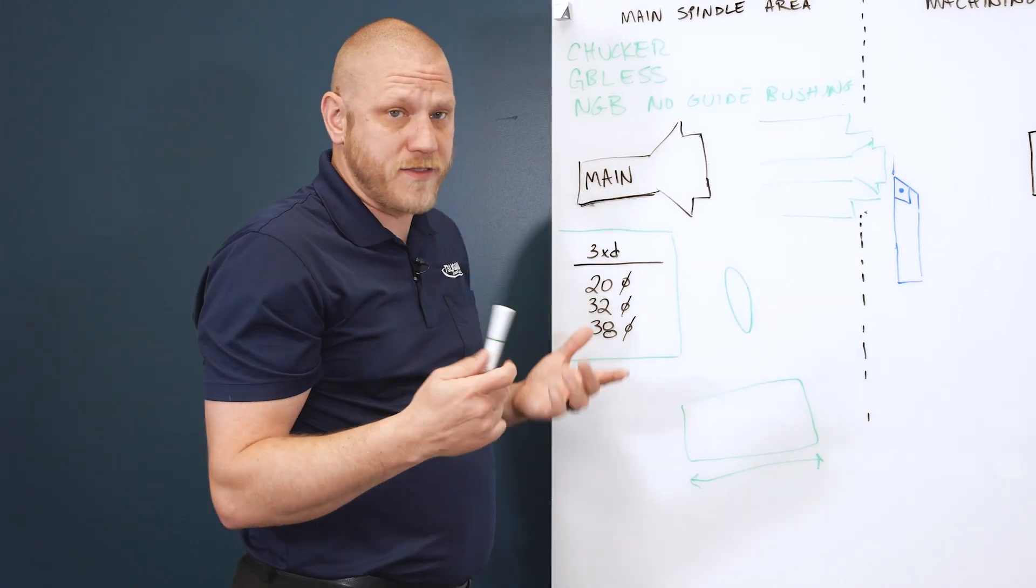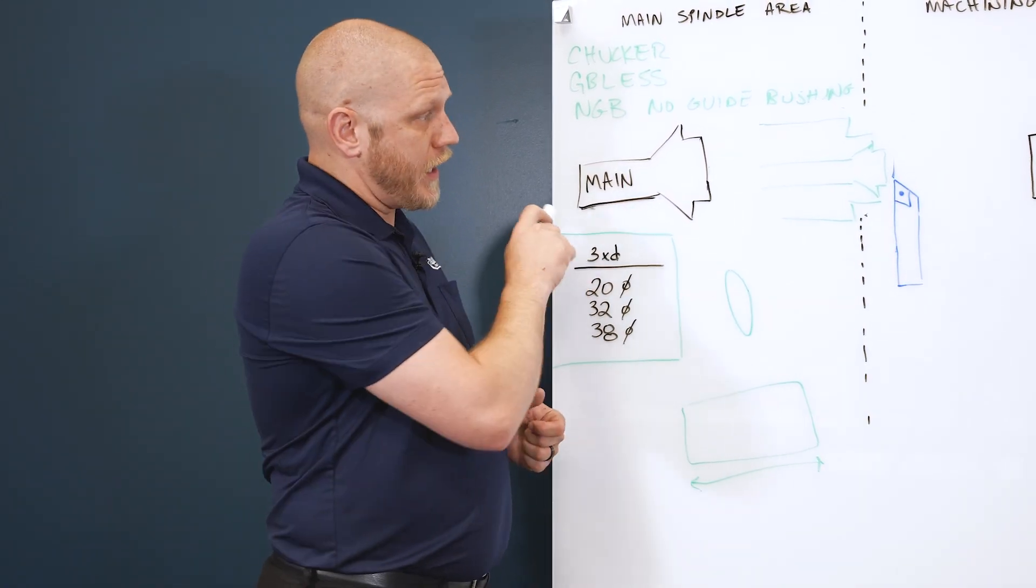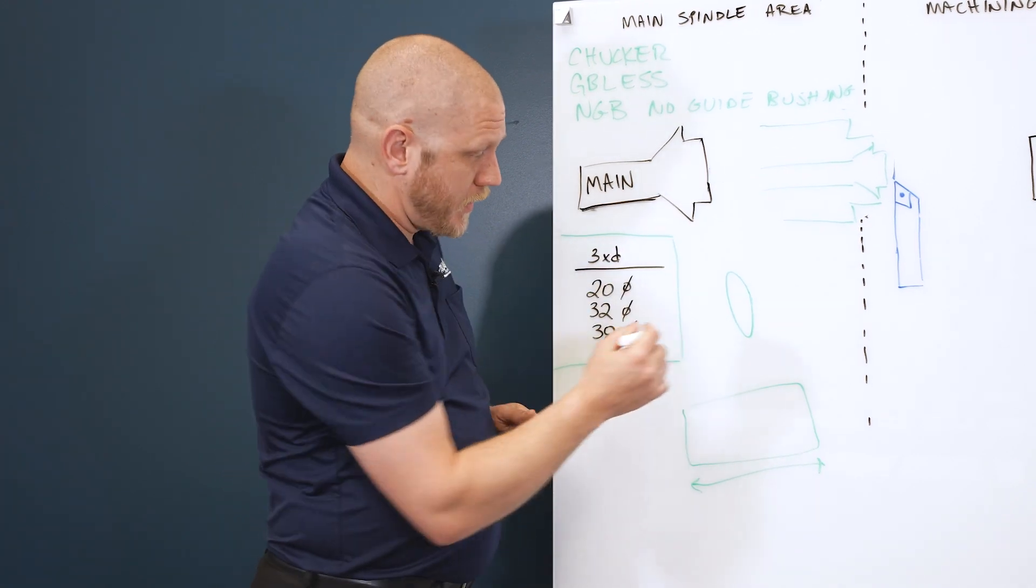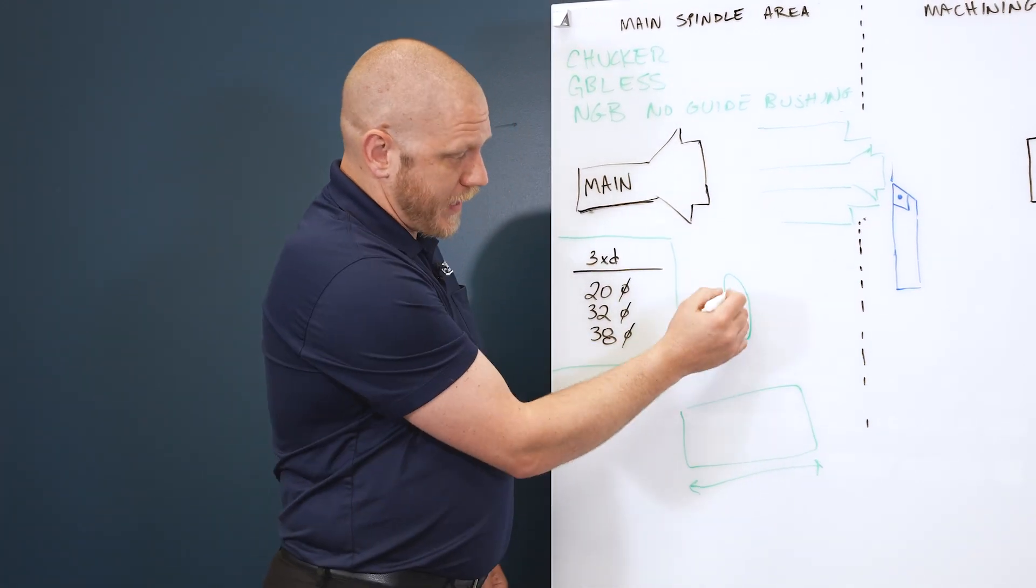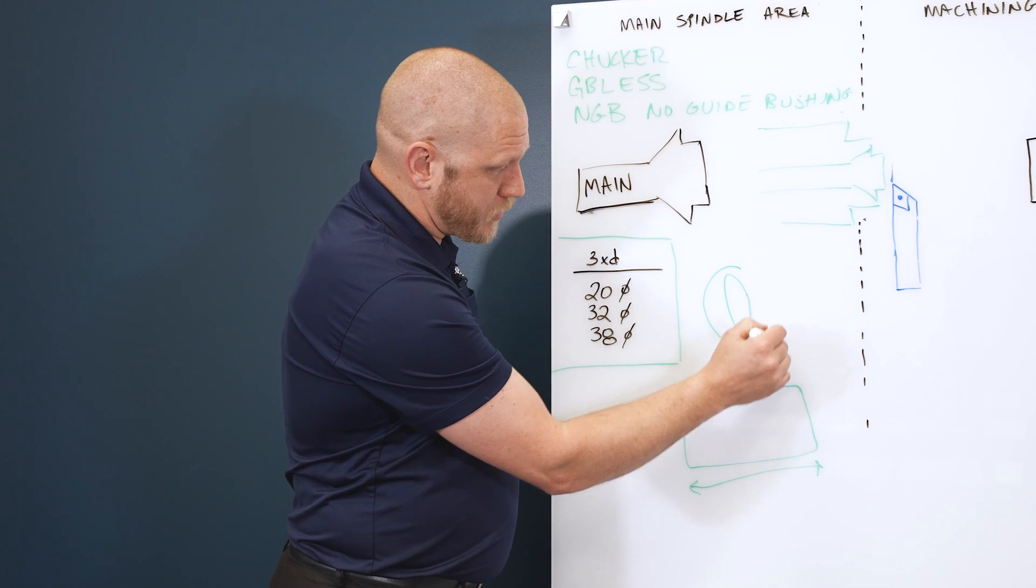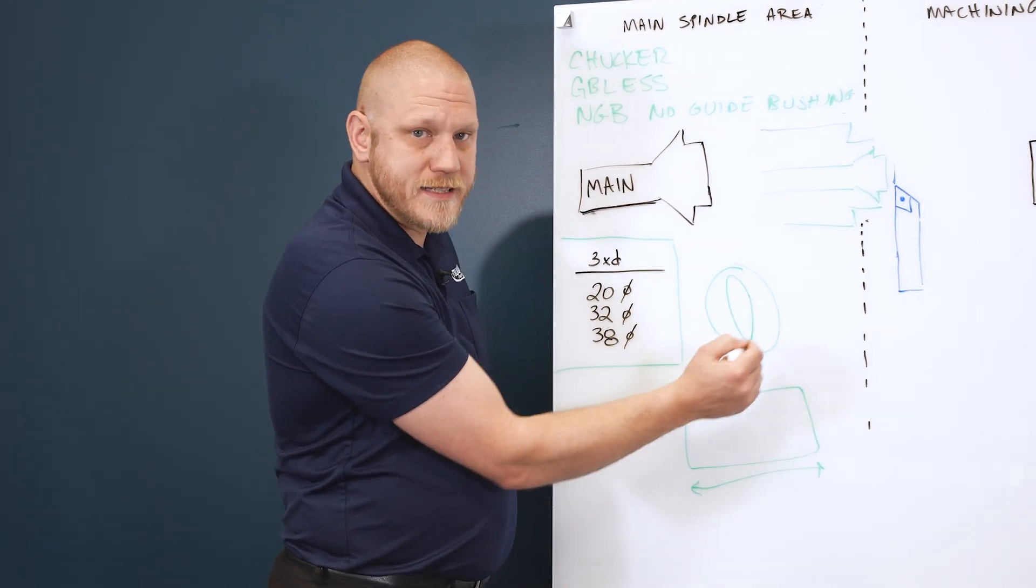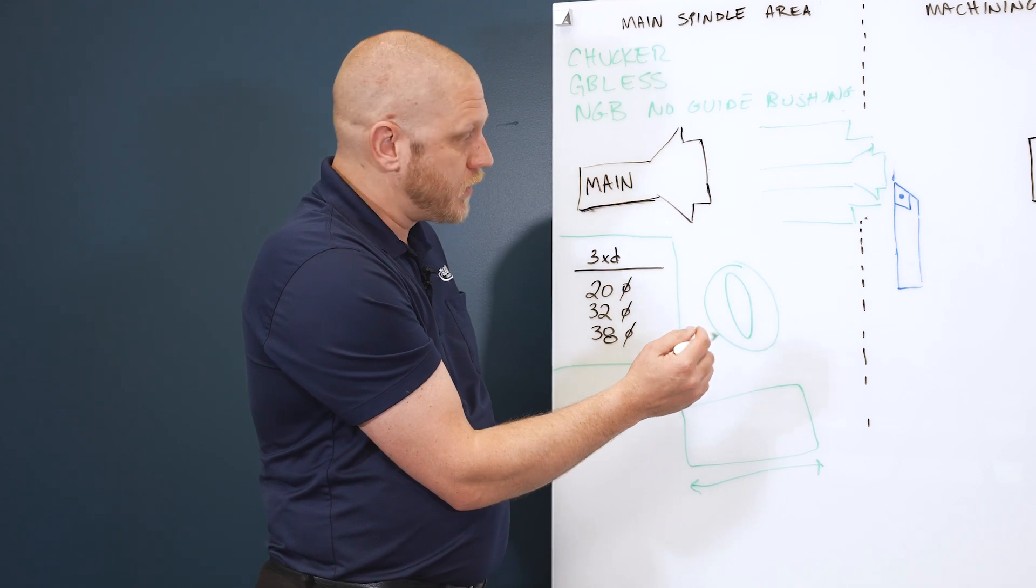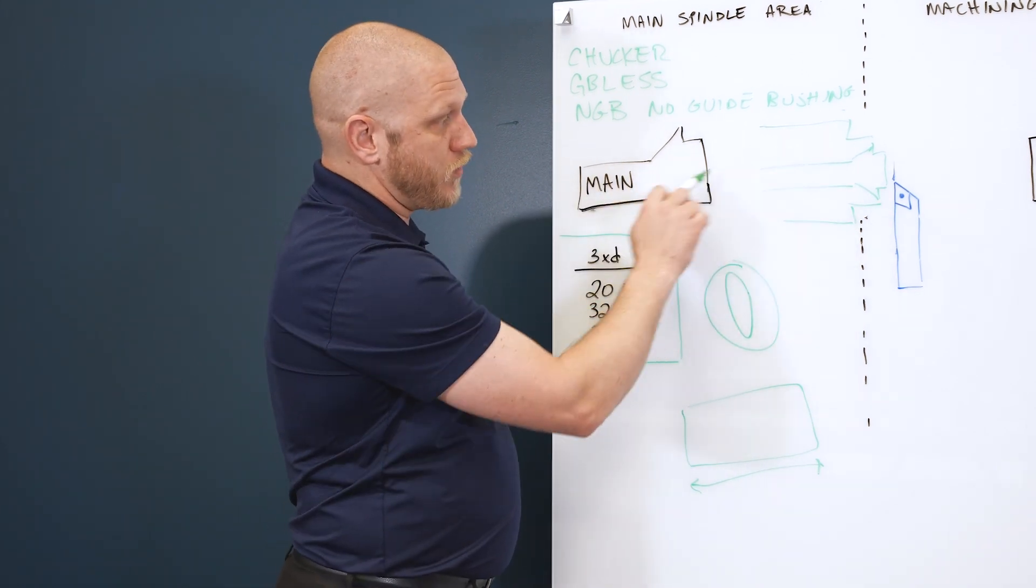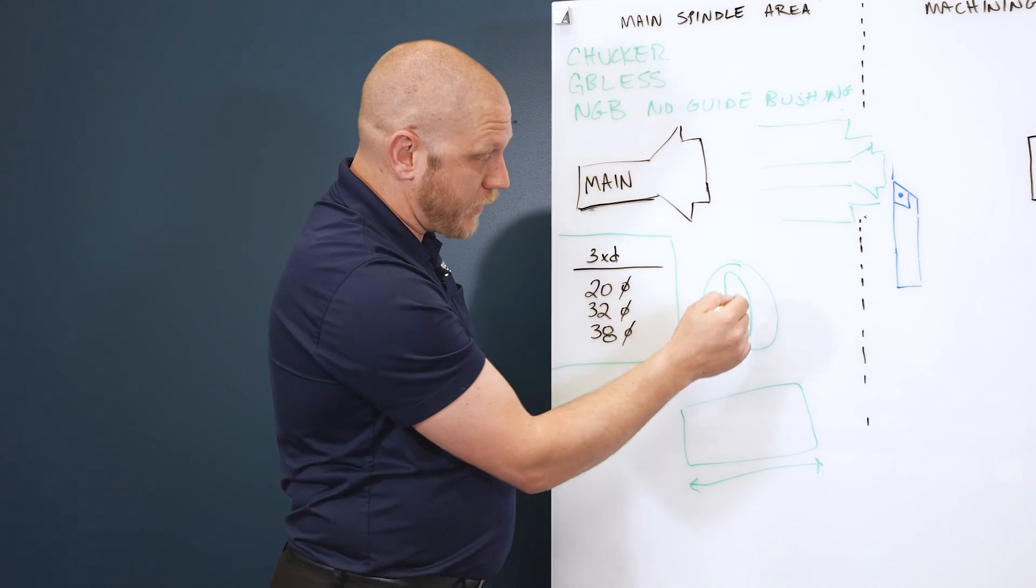If your material has a thou or two thou runout and you run that material through a guide bushing, it's going to follow the egg-shape pattern. Even if your guide bushing is nice and round, it's going to push up against one side and create that same egg shape pushing through a guide bushing. However, if you're in chukar mode, you're just pushing through a collet, gripping with a collet, and you're going to create your own centerline and make a round part.